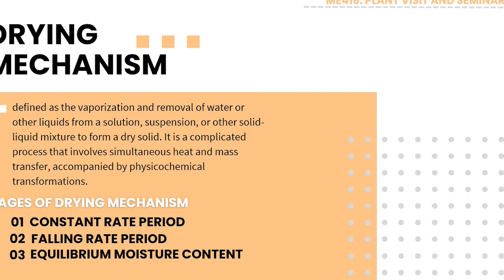Drying mechanism is defined as the vaporization and removal of water or other liquids from a solution, suspension, or other solid-liquid mixture to form a dry solid. It is a complicated process that involves simultaneous heat and mass transfer accompanied by physicochemical transformations. Basically, the meaning of drying mechanism is simply to remove the water content from the product. The stages of the drying mechanism are the constant rate period, falling rate period, and equilibrium.